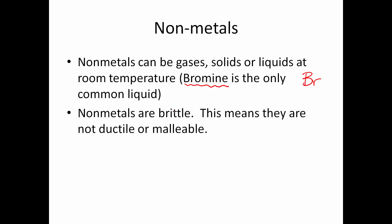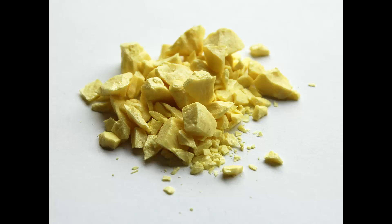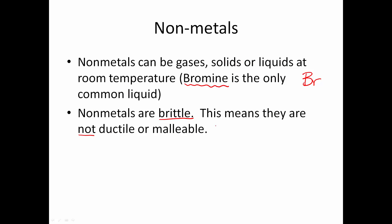Nonmetals are also brittle. What does this mean? It means they are not ductile, nor are they malleable — kind of the opposite of metals. If you hit a solid nonmetal like a chunk of sulfur with a hammer, it's not going to bend out. It's going to shatter. That's the definition of brittle.